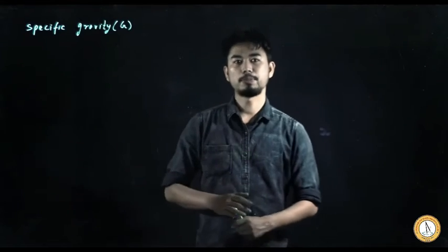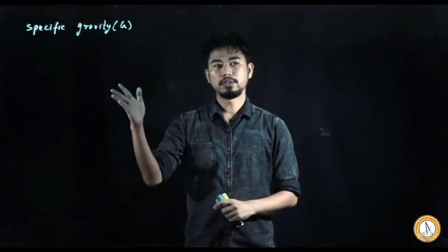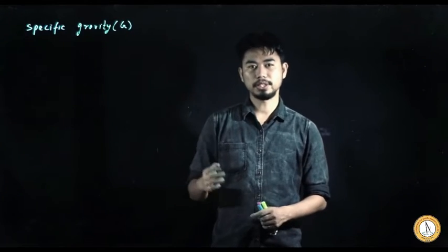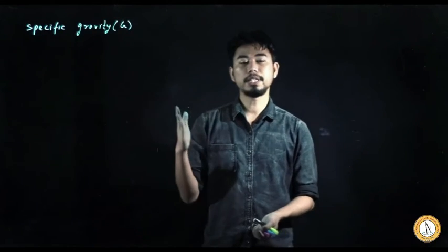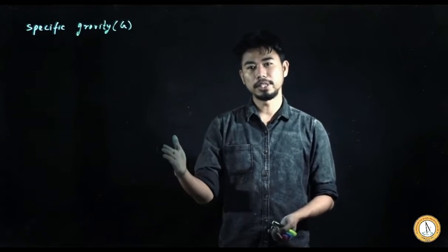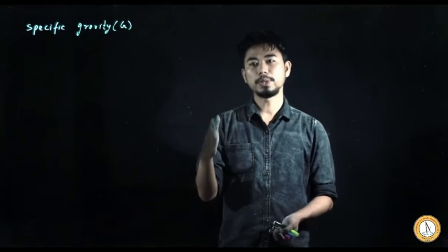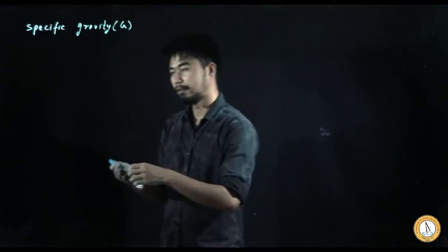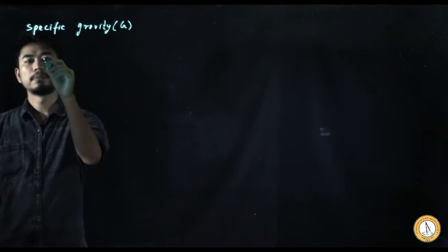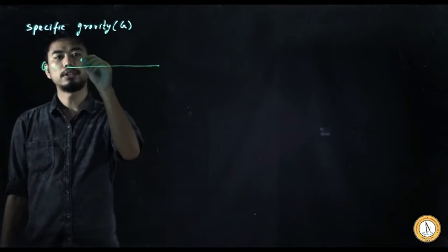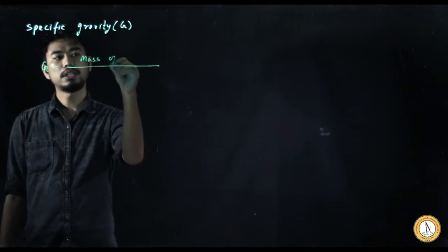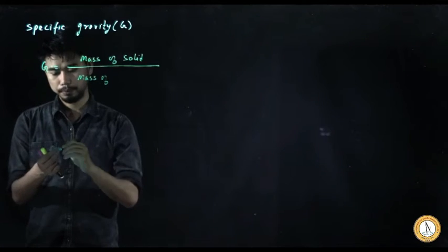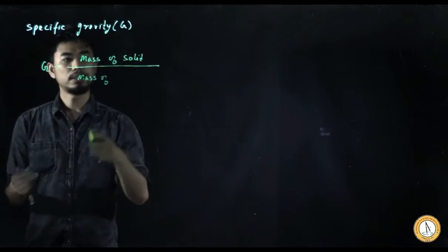Let's discuss specific gravity. The definition: specific gravity is the ratio of the mass of the solid to the mass of an equal volume of water. So G is equal to — in the numerator we have mass of solid, and in the denominator we have mass of equal volume of water.